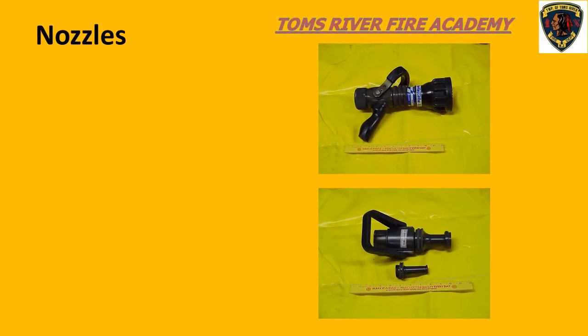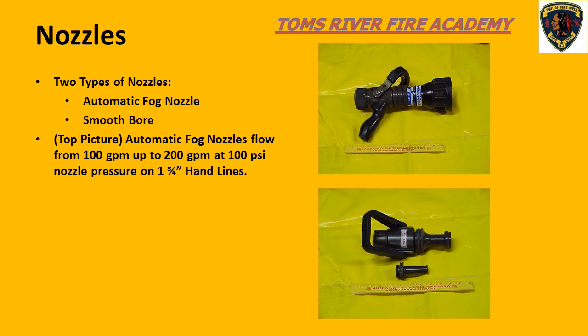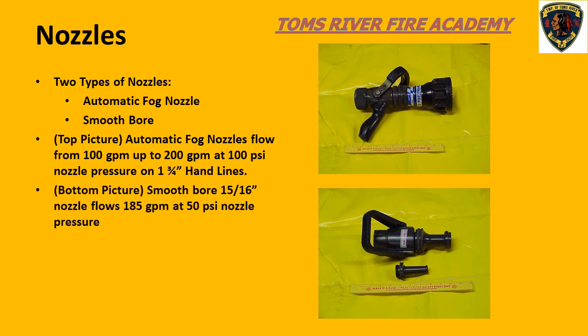Before we discuss friction loss, let us review the nozzles we will use on inch and three-quarter hand lines. The two basic types of nozzles we use are automatic fog nozzles and smoothbore nozzles. The top picture is a TFT brand automatic nozzle. This nozzle can flow anywhere from 100 gallons a minute up to 200 gallons a minute when used on an inch and three-quarter hand line. The operation of the automatic nozzle will be discussed on the next slide.